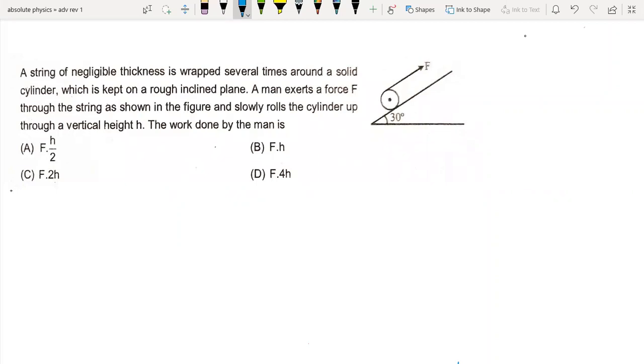Now we will go to the advanced package, and this is question number 28, an objective type single correct question. A string of negligible thickness is wrapped several times around a solid cylinder which is kept on a rough inclined plane. A man exerts a force through the string and slowly rolls the cylinder up through a vertical height h. The work done by the man lifts it to height h.